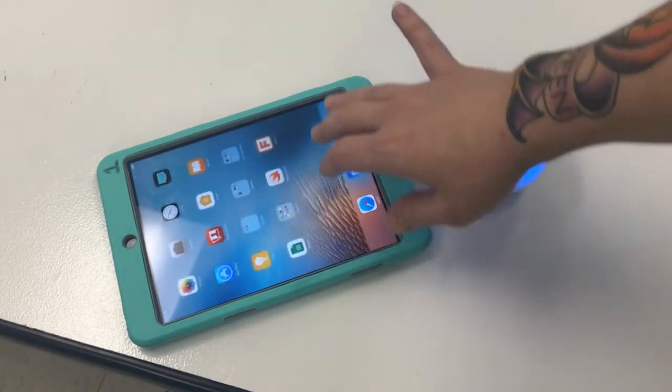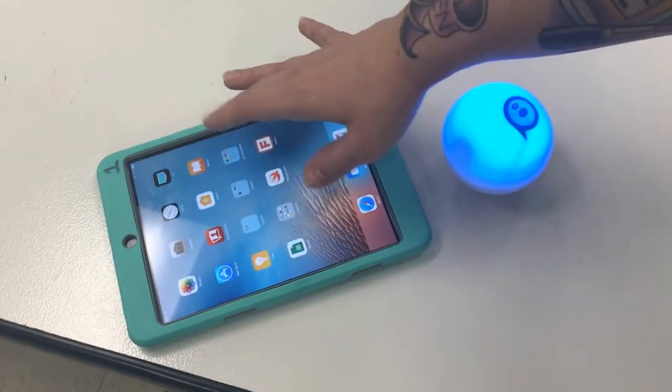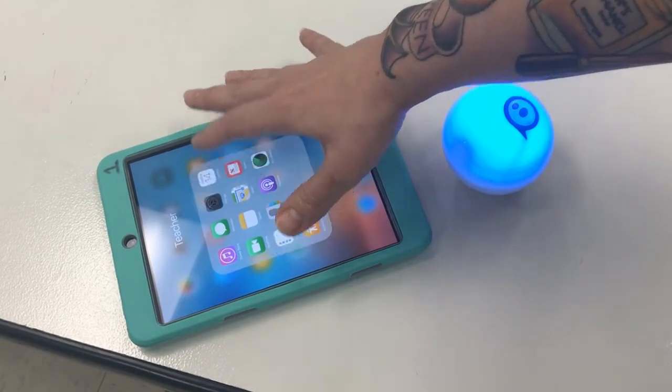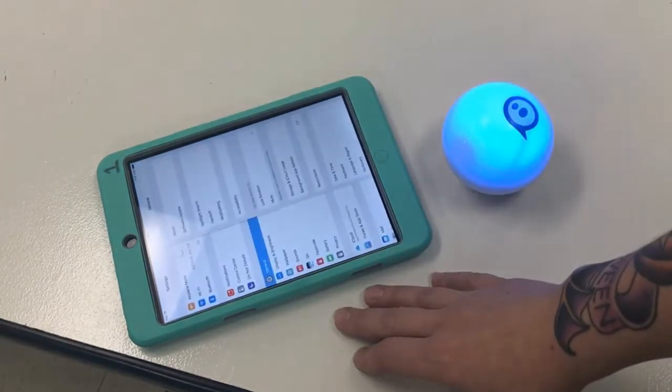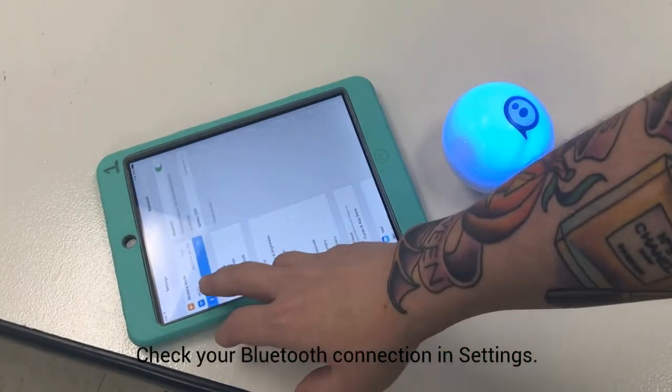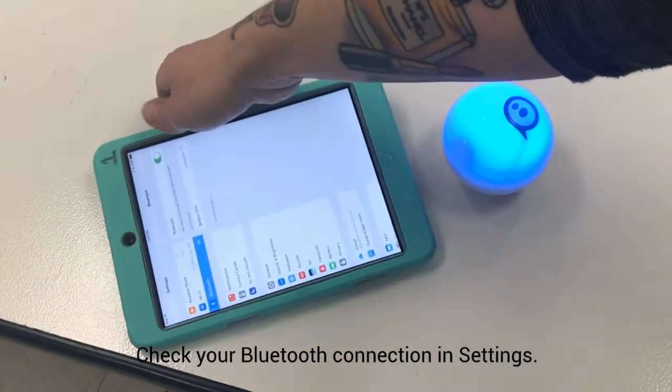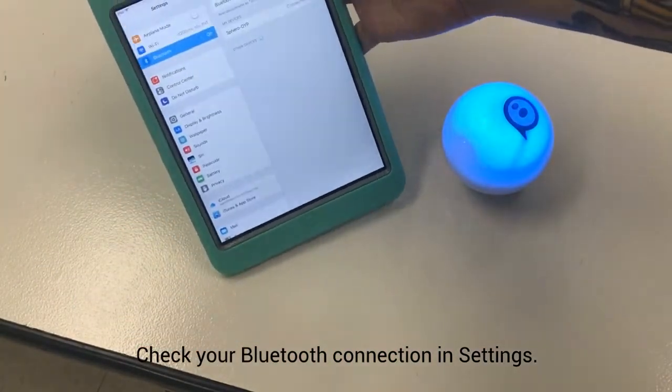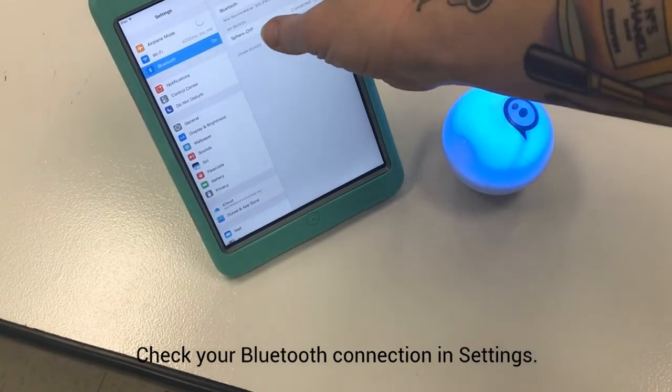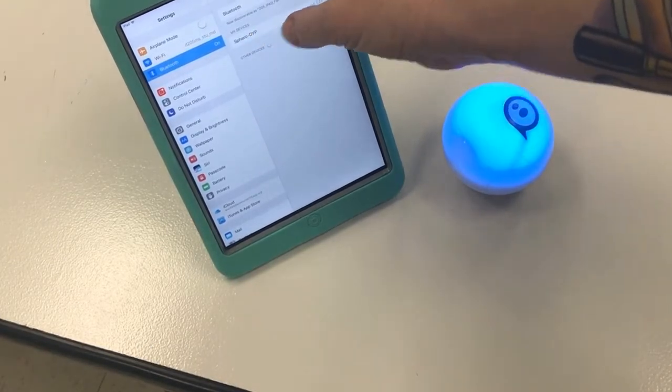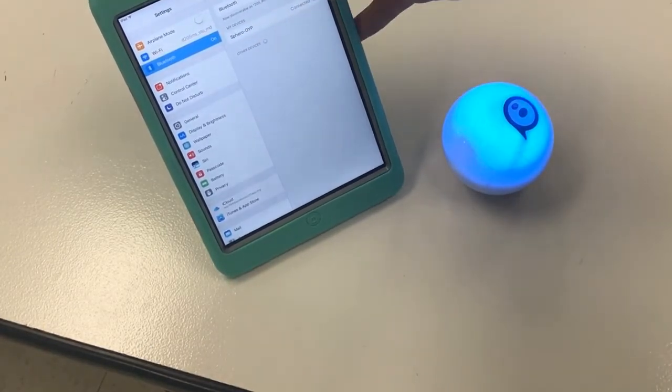You can also go into the settings on your iPad and check the Bluetooth connection. So I'm going to click Bluetooth and I'm going to look to see because my Spheros are already paired, they should pop up under my devices, and in this case you can see Sphero OIP is connected.